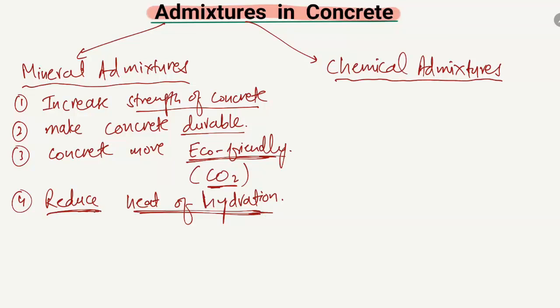Now, what are chemical admixtures and what are their purposes? The most common purpose is that they help in increasing the workability — they make the concrete more workable, giving it high workability. The second purpose is the acceleration of the setting time of concrete.